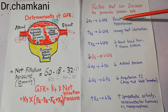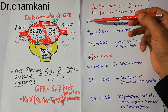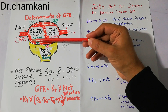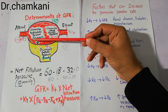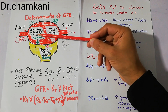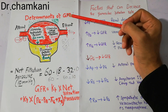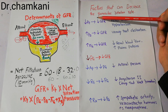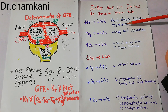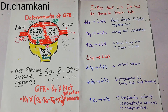The decrease in Kf can occur due to renal diseases themselves, and it can also decrease in diabetes or hypertension. Most renal diseases, diabetes, and hypertension thicken the glomerular capillary membrane, due to which the filtration of fluid from the glomerular capillary into the Bowman's capsule decreases. Hence, Kf decreases, and the glomerular filtration rate decreases. These are the common conditions which can decrease Kf, apart from many other conditions.